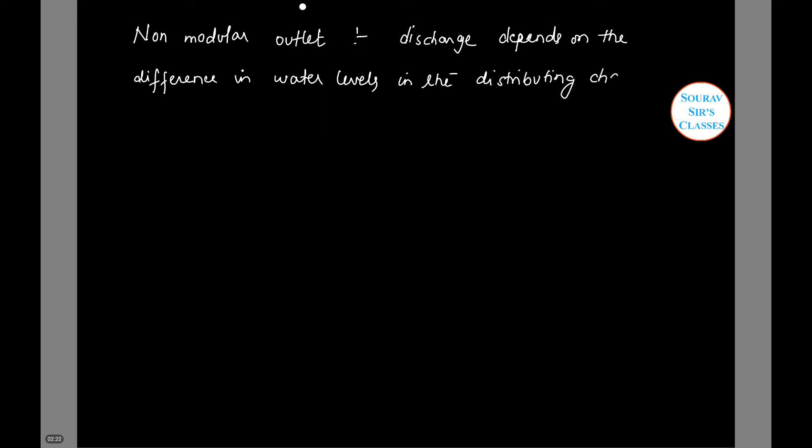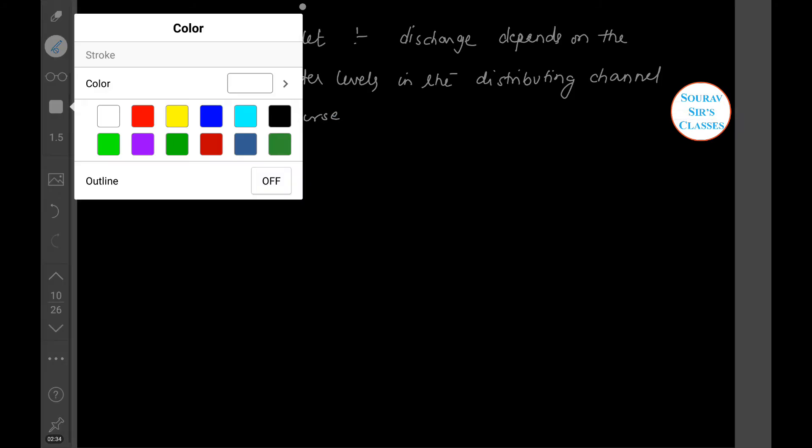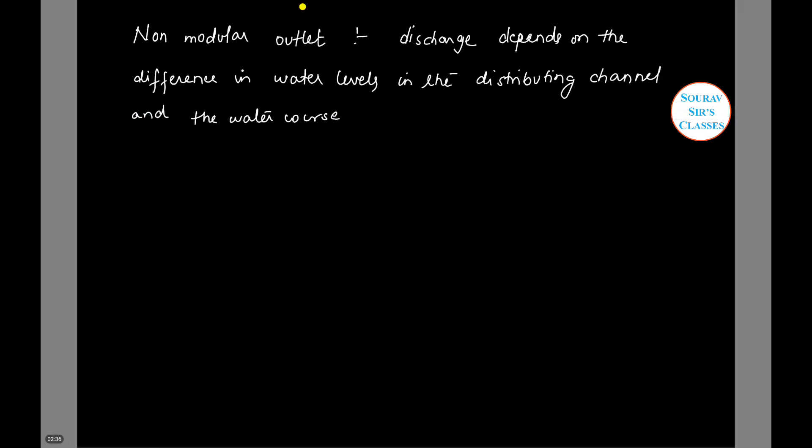Therefore, we can say that the amount of water discharge varies with variation of the water levels in both the distributing channel and the water course.